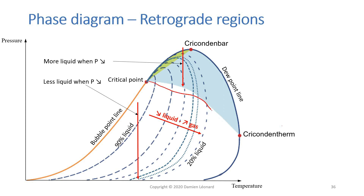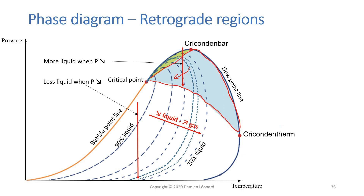Now if you are in this blue region, and your reservoir pressure is initially over there, as you produce and the pressure decreases, you will cross these lines because they curve this way. You will move to curves further to the left while remaining in this blue region. Because of that, as the pressure decreases you tend to cross this dashed line from right to left, meaning in this area pressure decrease leads to more and more liquids — whereas in the other area, pressure decrease leads to less and less liquids.